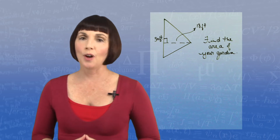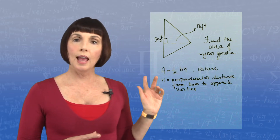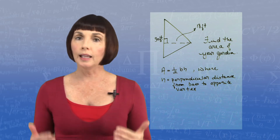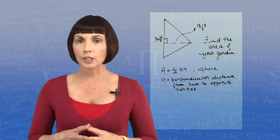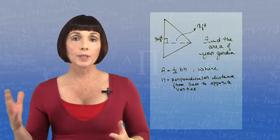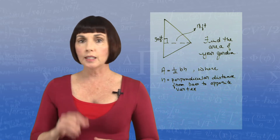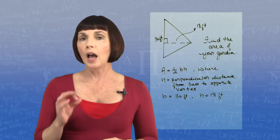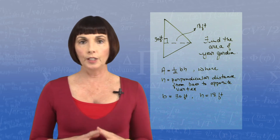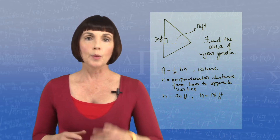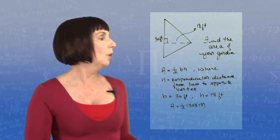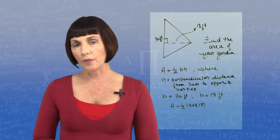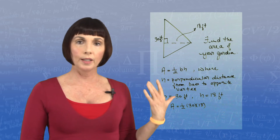The area of a triangle is equal to one-half base times height, where the height is the perpendicular distance from the base to the opposite vertex. In this case, our base B is equal to 30 feet and the height is equal to 18 feet. So we plug that in and get that the area is equal to one-half times 30 times 18. 30 times 18 is 540, so one-half of 540.